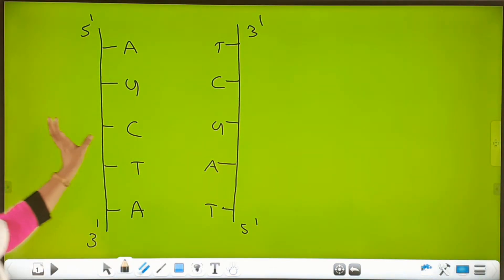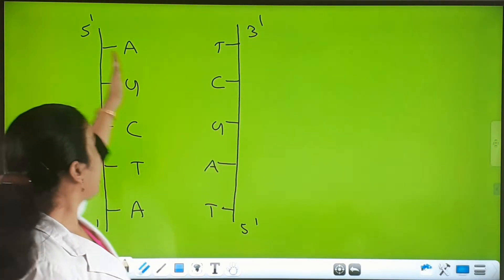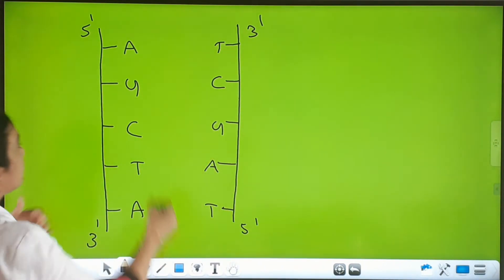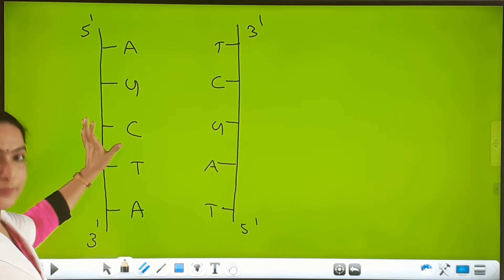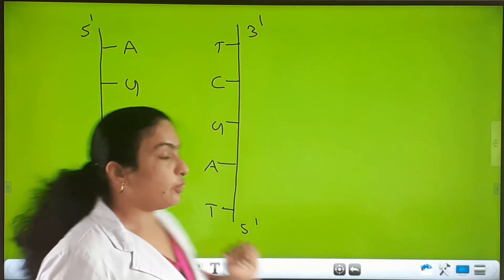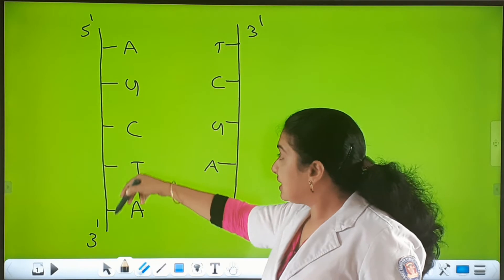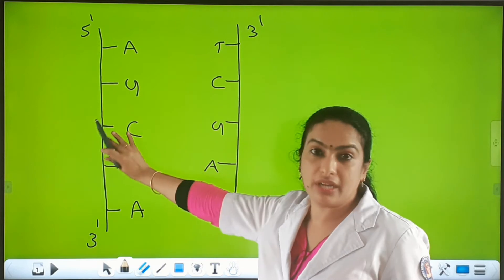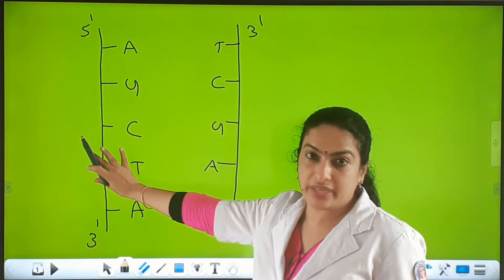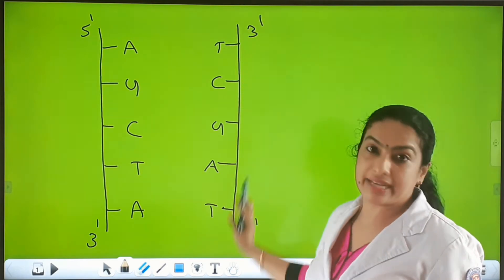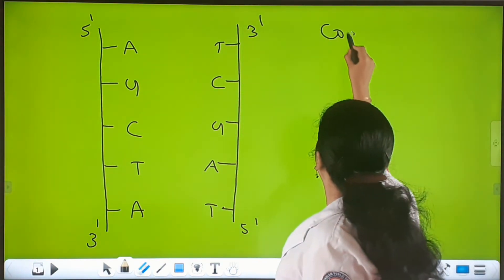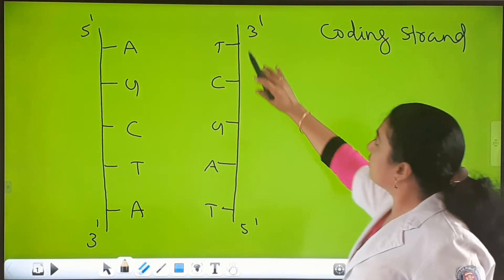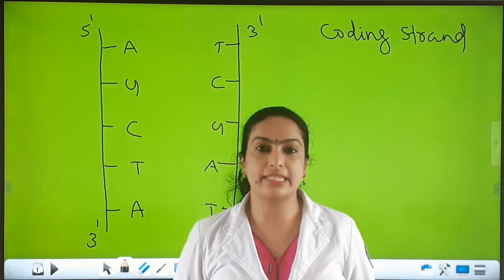Only one of the strands acts as a template strand; both strands are not involved in transcription. The strand which acts as a template strand makes an mRNA that is complementary to it. The strand which does not take part in transcription is called the coding strand.